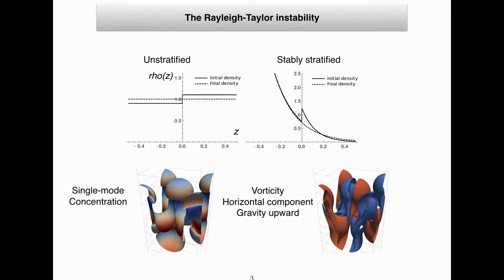Just to recall the various configurations of Rayleigh-Taylor instability. We are talking about this instability for a week and for years. There are several configurations: the unstratified configuration where the density has a specific profile — for example for the Boussinesq model for liquids — and also the stably stratified configuration, meaning two pieces of stably stratified fluid with a density jump at the interface. This is an example of RT instability: a single mode showing concentration, gravity, vorticity — the horizontal component of vorticity — one positive and one negative.